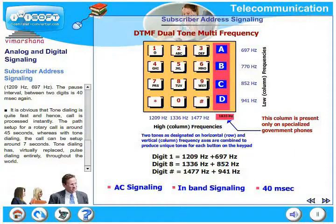The call setup time for a rotary call is around 45 seconds, whereas for tone dialing it can be just 7 seconds. Tone dialing has virtually replaced pulse dialing entirely throughout the world.